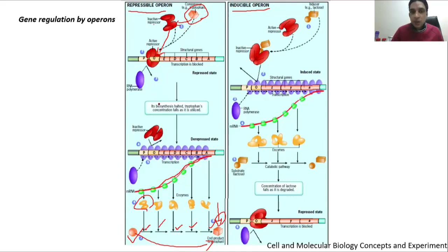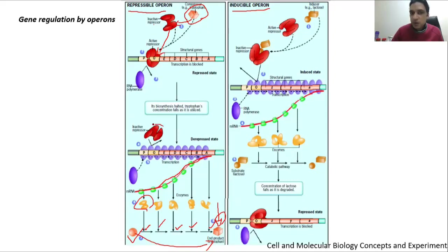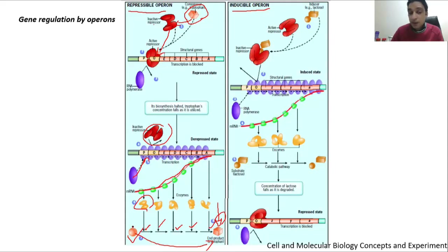This makes sense because tryptophan is already present in the system, so we don't need to create more. Now consider another scenario: if the system does not have any tryptophan, it needs a biosynthetic supply. When the active repressor loses the tryptophan, it becomes inactive, leaves the operator, and allows RNA polymerase to bind with the promoter and begin synthesizing the five genes, which execute the metabolic pathway and produce more tryptophan.